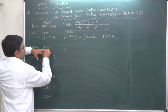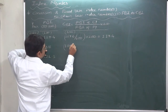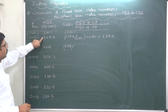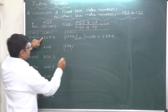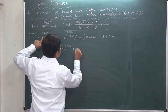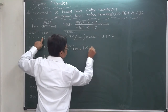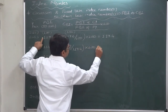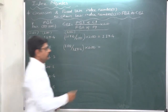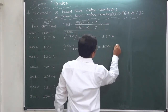For 2014: the fixed-base index number for the current year is 118, divided by the fixed-base index number for 2013, which is 117.4. Multiply this ratio by 100. The answer is 100.51.